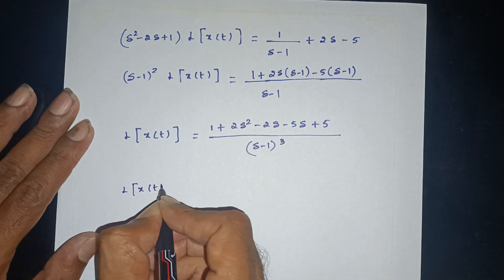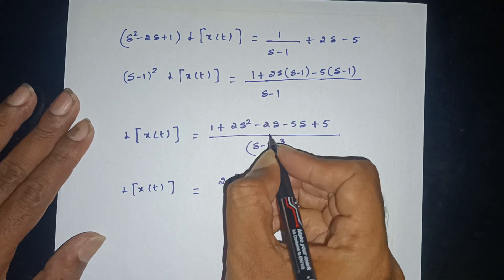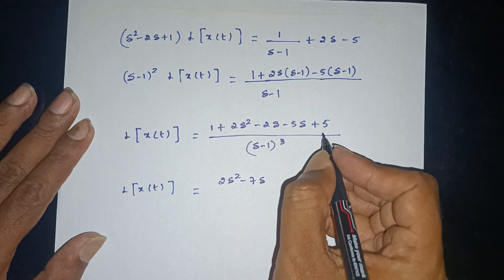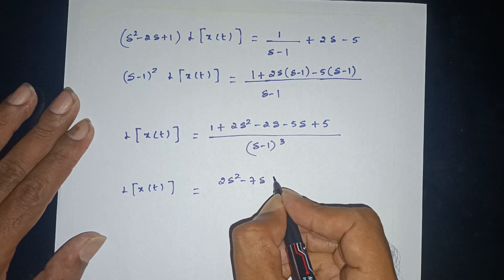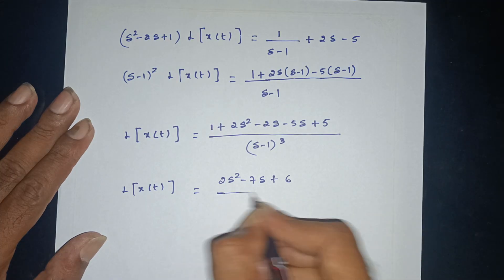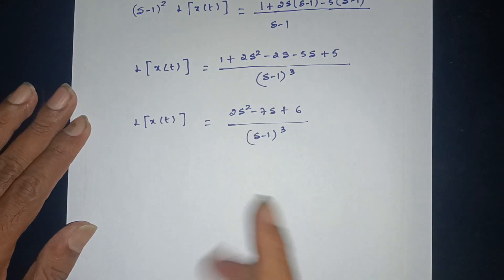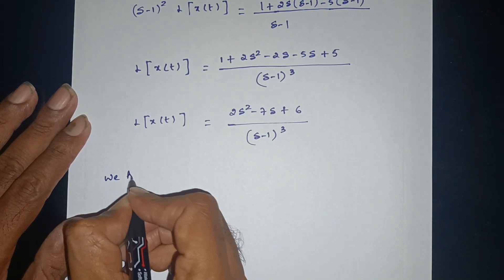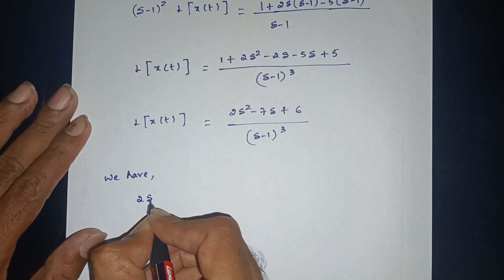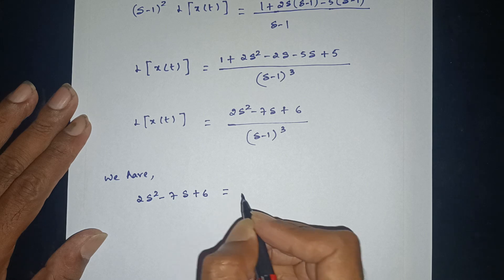Laplace of x of t is equal to 2s² minus 2s minus 5s minus 7s plus 5 plus 1, which simplifies to numerator 2s² minus 7s plus 6, divided by (s-1) whole cube.